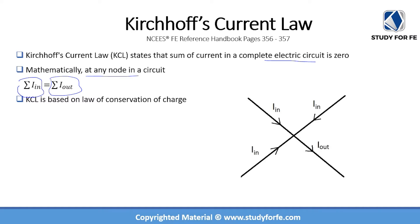Let's take a look at this example. We have a junction or crossroads where three currents are entering the node, so all three currents added together should be equal to the current I_out which is leaving the node. KCL is simply based on the law of conservation of charge.